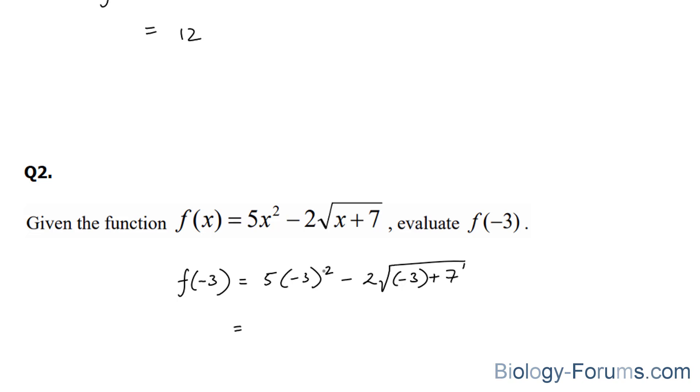(-3)² is 9, times 5 is 45. Keep in mind that by putting these brackets around the negative 3,